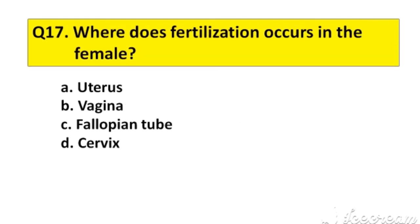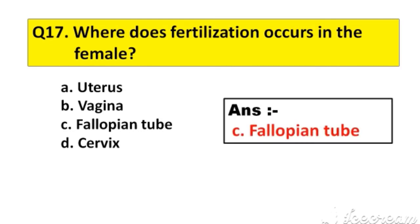Question number 17. Where does fertilization occur in the female? A. Uterus, B. Vagina, C. Fallopian tube, D. Cervix. The right answer is option C, Fallopian tube.